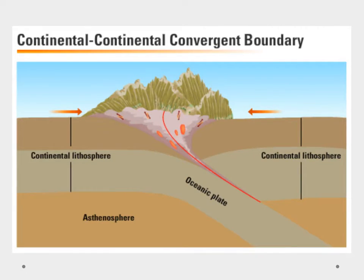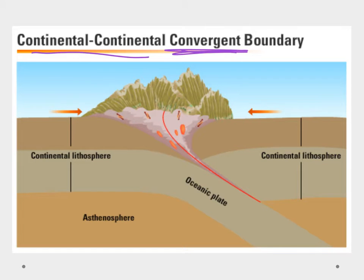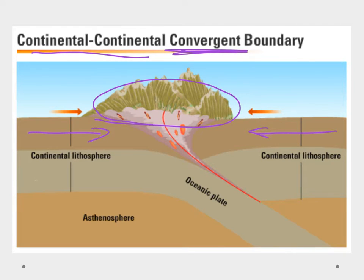Now we would think that with a convergent boundary we're talking about subduction and volcanic activity. But when we have a continental-continental convergent boundary, it's kind of more like a car wreck. If you've ever looked at the hoods of cars when they collide, they buckle up — and that's what we see here. One continental plate goes one way, the other comes the other way, and they collide to form a big mountain range.